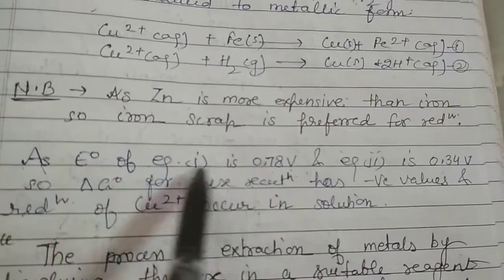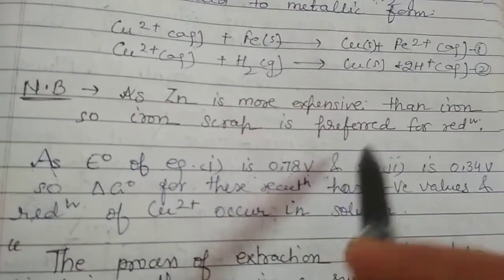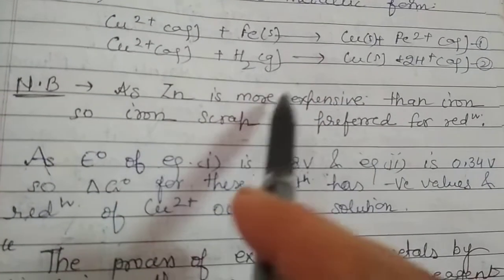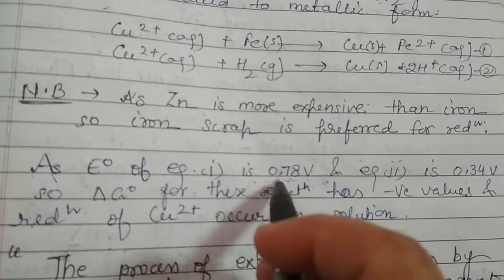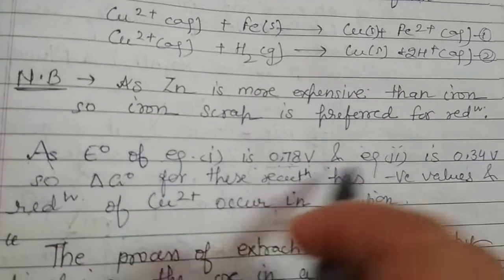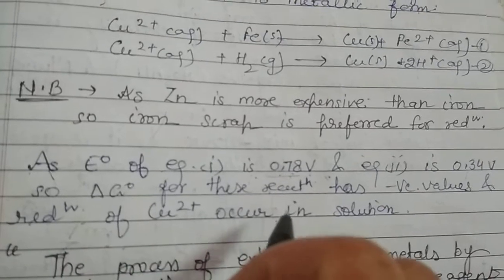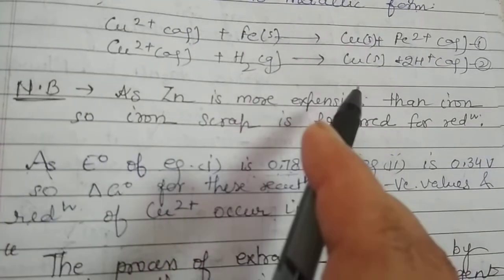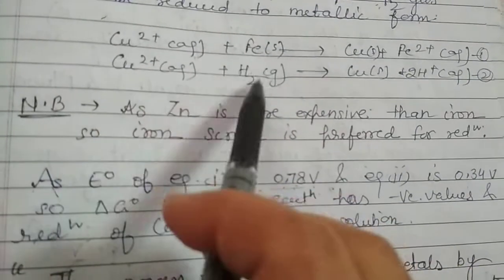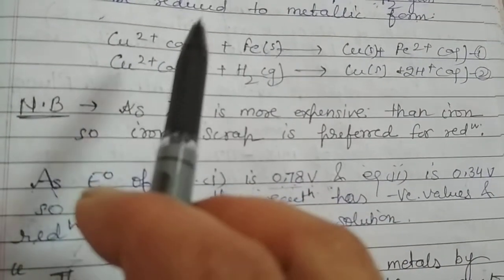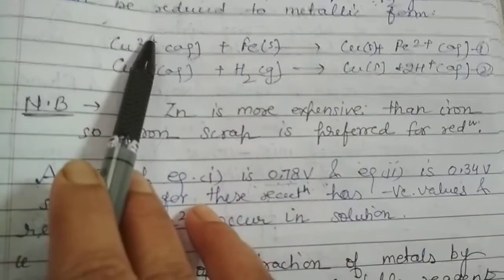I have written E⁰ of equation 1 as 0.78 volt (positive) and for the second as 0.34 volt, as I explained yesterday. So we are getting ΔG⁰ as negative and the reduction of copper ion can occur in solution. But as zinc is more expensive than iron, we prefer to use iron scrap in comparison to zinc scrap.